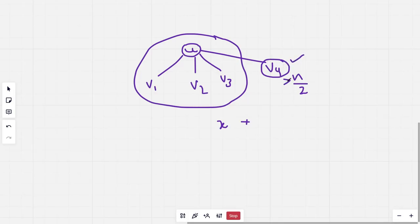So x is equal to n minus y, and since y is greater than n by 2, x becomes less than n minus n by 2, or less than n by 2.